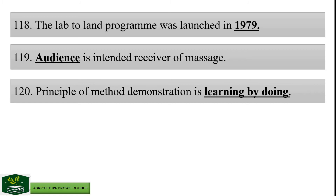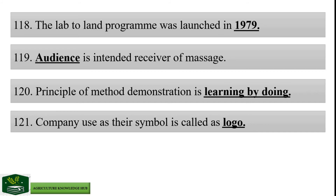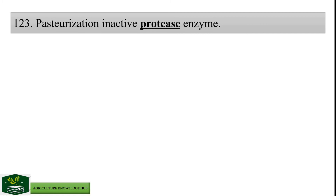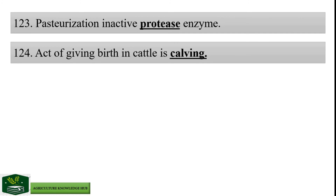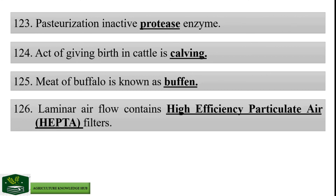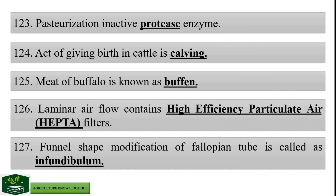Company used as their symbol is called a logo. Feed containing more than 18% crude fiber is roughages. Pasteurization inactivates protease enzymes. Act of giving birth in cattle is calving. Meat of buffalo is known as buff. Laminar air flow contains high efficiency particulate air filters. Funnel-shape modification of fallopian tube is called infundibulum.